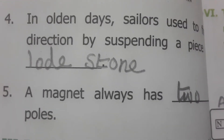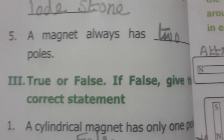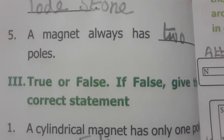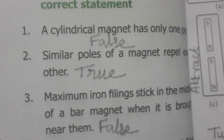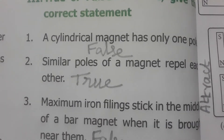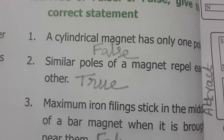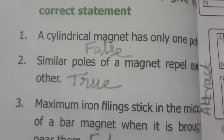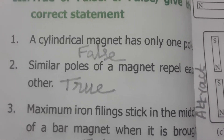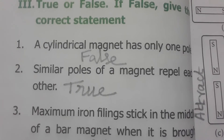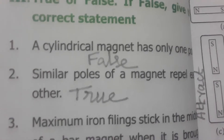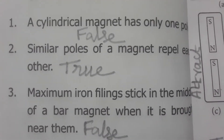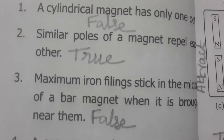A magnet always has two poles — north pole and south pole. For true or false: a cylindrical magnet has only one pole — this is false, because the cylinder has two ends, so each end acts as north and south respectively. The correct statement is: a cylindrical magnet has two poles. Similar poles of a magnet repel each other — this is true.